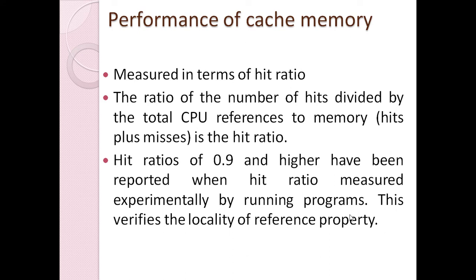To measure the performance of cache memory, we use the term hit ratio. The hit ratio is the number of hits divided by the total number of CPU memory references. Total CPU references equals total hits plus total misses. The hit ratio is generally observed to be nearly 0.9 or higher.